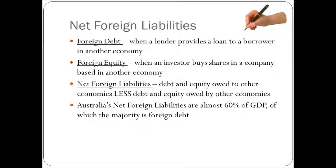Net foreign liabilities. Foreign debt. That's when a lender provides a loan to a borrower in another economy. Foreign equity is when an investor buys shares in a company based in another economy. That's in either direction. Australians can give a loan to someone in China, to a business in China. And a Swiss investor can buy shares in an Australian company. It can go either way. Net foreign liabilities is debt and equity owed to other economies less debt and equity owed by other economies. So it's the net value. The amount that Australia is owed by other economies less the amount that we owe to other economies. And that gives you your net foreign liabilities. And it's a deficit. So we owe more. And finally, Australia's net foreign liabilities are almost 60% of GDP, of which the majority is foreign debt.